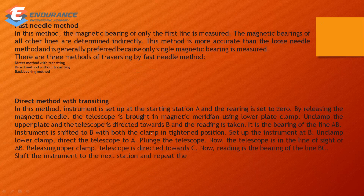The next is the fast needle method. In this method, the magnetic bearing of only the first line is measured. The remaining magnetic bearings are calculated from that. In this method, only a single magnetic bearing is measured directly, and the rest are derived.